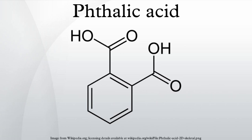References note several melting points for phthalic acid, for example: 210–211 degrees Celsius with decomposition, 191 degrees Celsius in a sealed tube, and 230 degrees Celsius with conversion to phthalic anhydride and water.